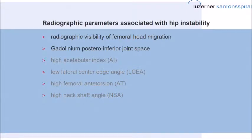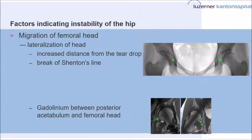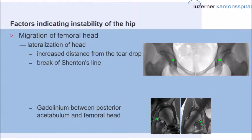If you look at radiographs, there are two signs that are clear indicators that the hip is unstable. One is radiographic evidence of femoral head migration when the head moves out laterally. We can see that the distance between the head and the teardrop or fossa on the left side is higher than on the right — this hip is clearly unstable, it moves out. It's also shown by the break of Shenton's line. Every time you have a break of Shenton's line, the hip is unstable and migrating.